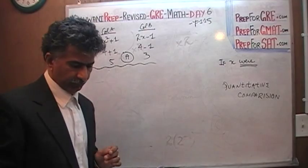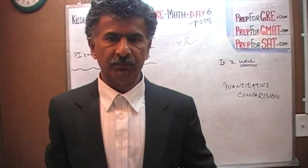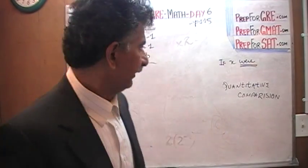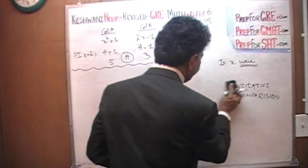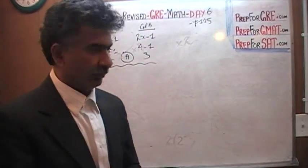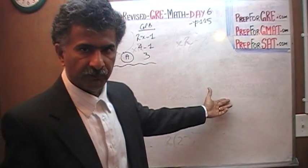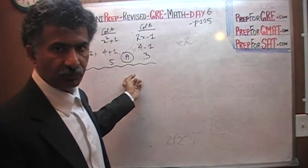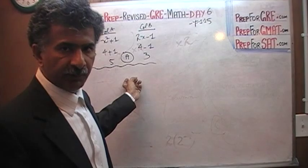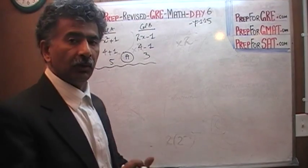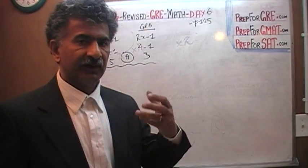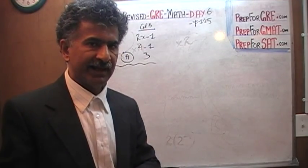Now, you have plugged in a nice whole positive number. It's time to do something wild — something out of the ordinary. When you are plugging in on the GRE quantitative comparison question — these questions are called quantitative comparison because you are given two quantities and asked to compare them — it is always a good idea the first time to plug in a nice whole positive number, and the second round to do something wild.